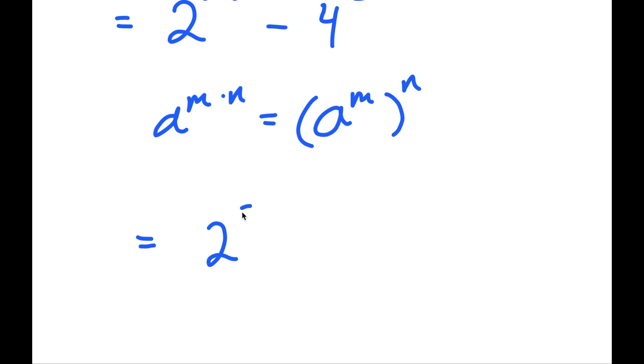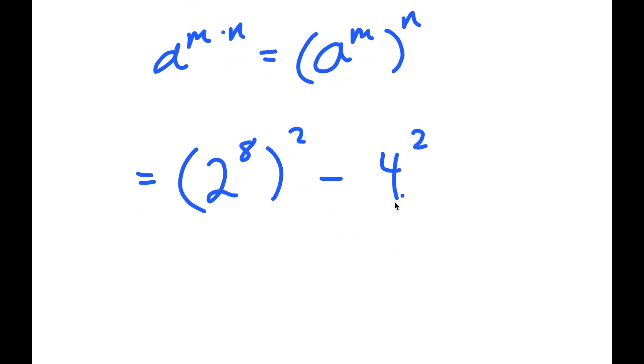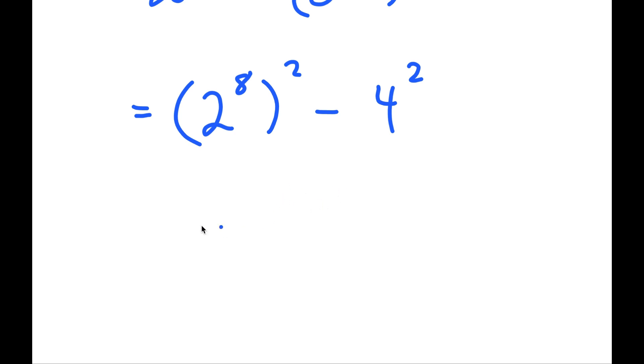So 2 to the power of 8 times 2 turns into 2 to the power of 8 to the power of 2, and I have this minus 4 to the power of 2. Now, if I have something of the form a squared minus b squared, this is equal to a plus b times a minus b.